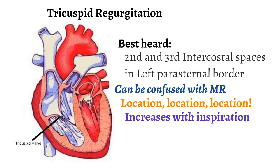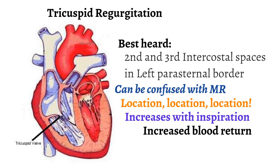During inspiration, more blood volume is delivered to the heart because of decreased intrathoracic pressure. As a result, tricuspid regurgitation increases during inspiration. This is called Carvello's sign. The reason this occurs is that during inspiration, there is a decrease in intrathoracic pressure, allowing greater blood return to the heart. Greater blood return means more regurgitant blood — blood moving the wrong way across the tricuspid valve — creating a louder murmur.